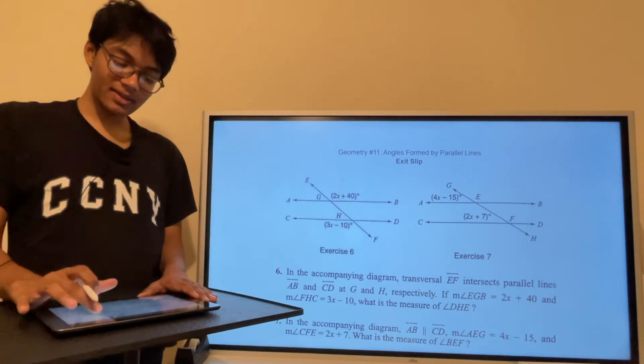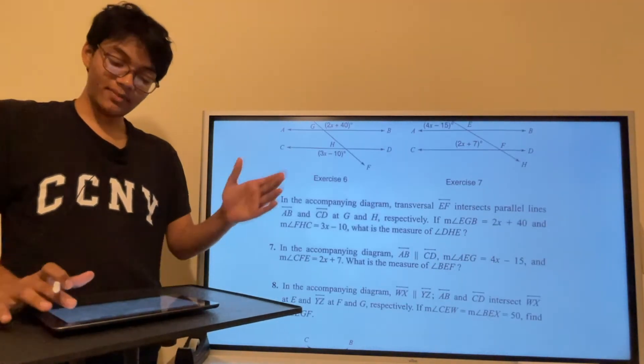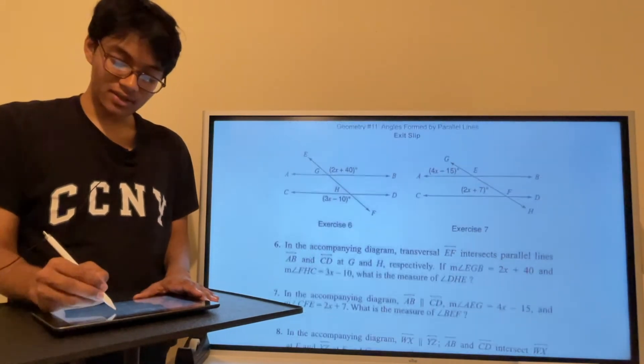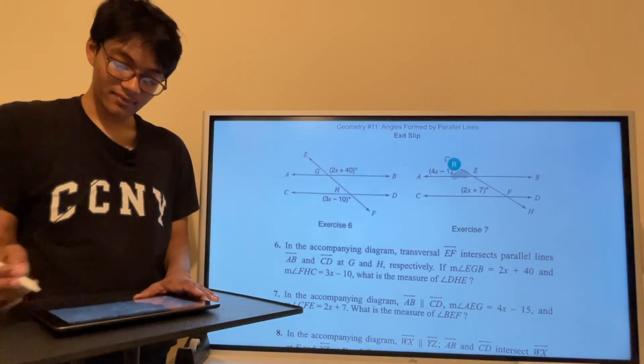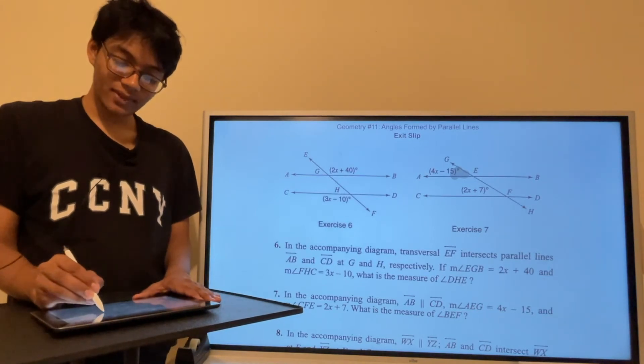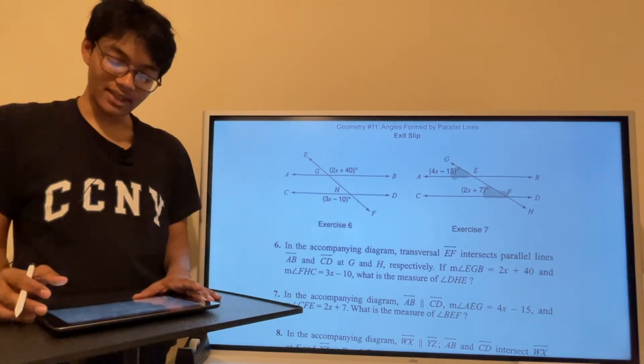Next question of the exit slip says in the accompanying diagram, AB and CD are parallel. The measure of angle AEG, which is this angle, is equal to 4x minus 15, and the measure of angle CFE, which is this angle, is 2x plus 7. What is the measure of angle BEF?